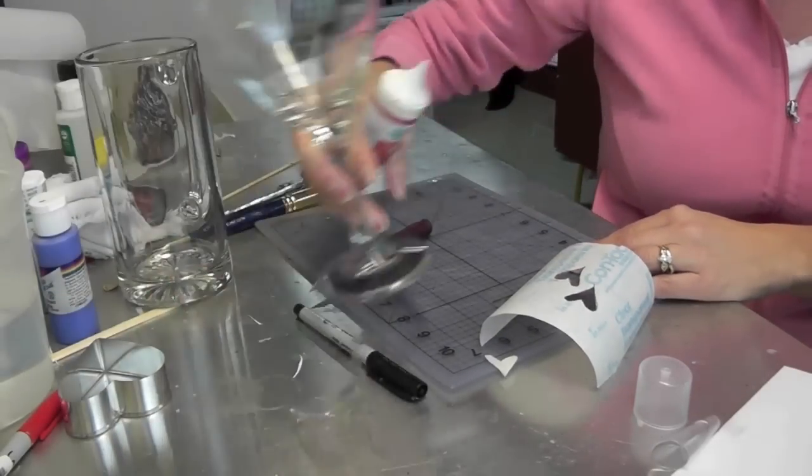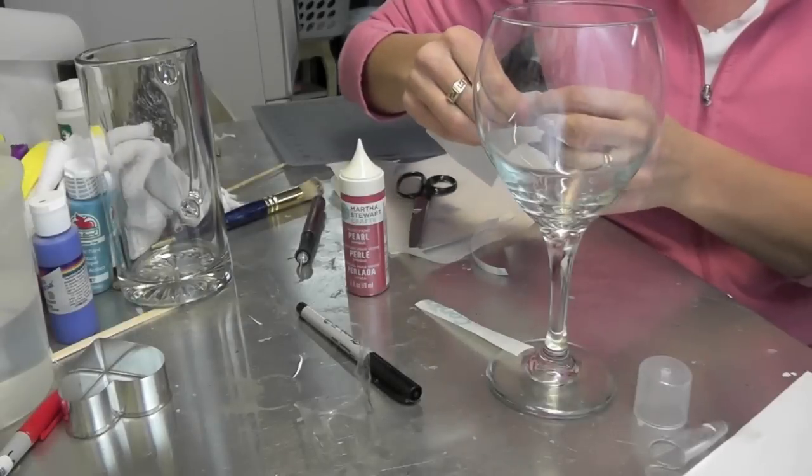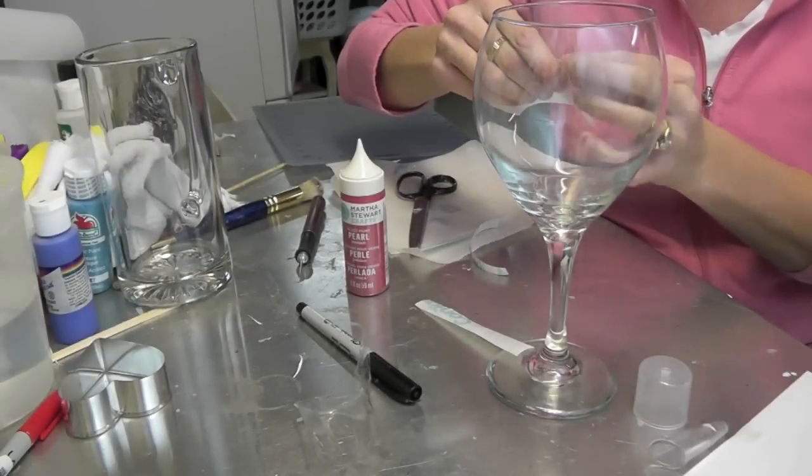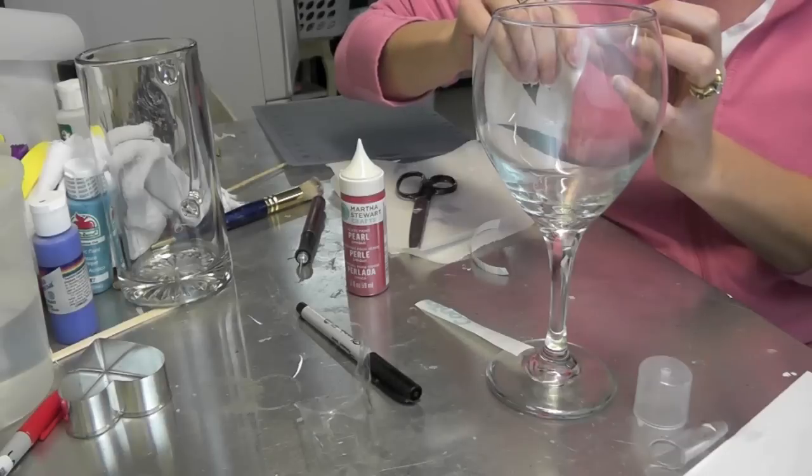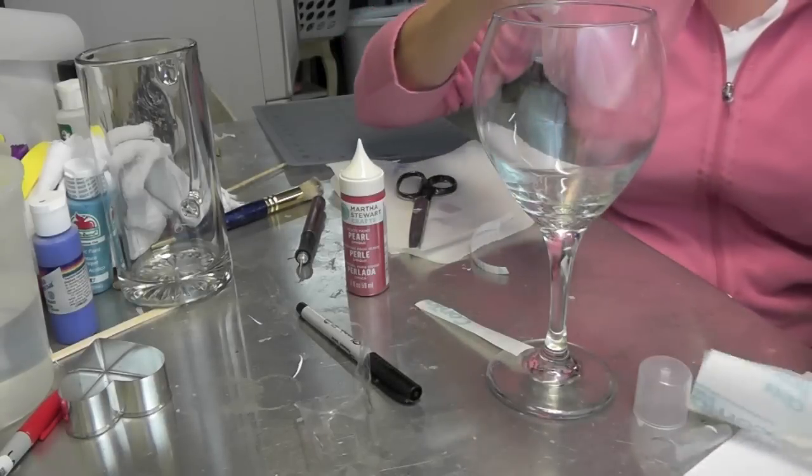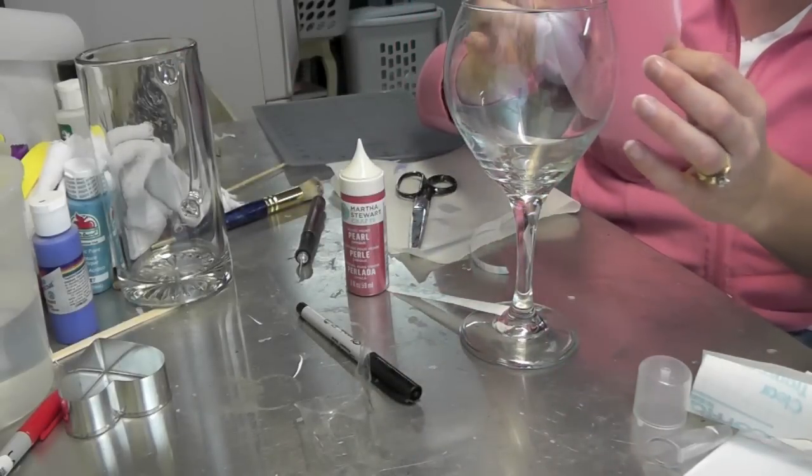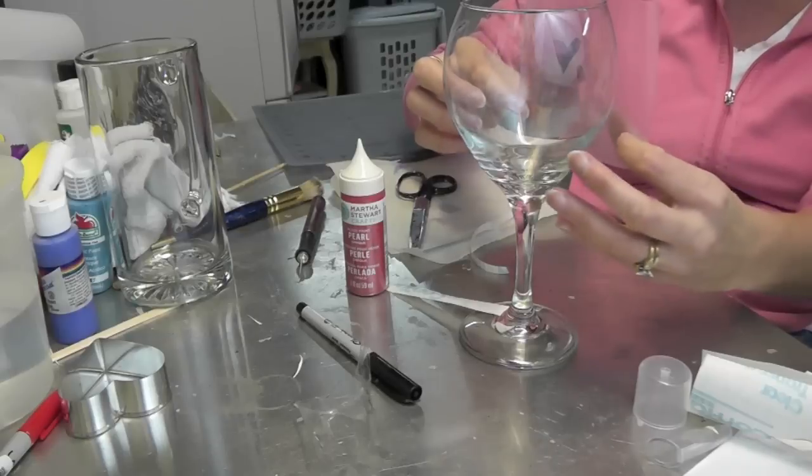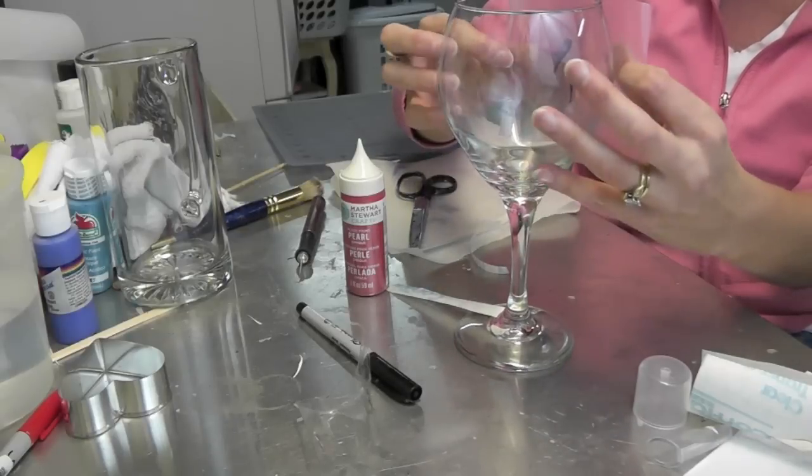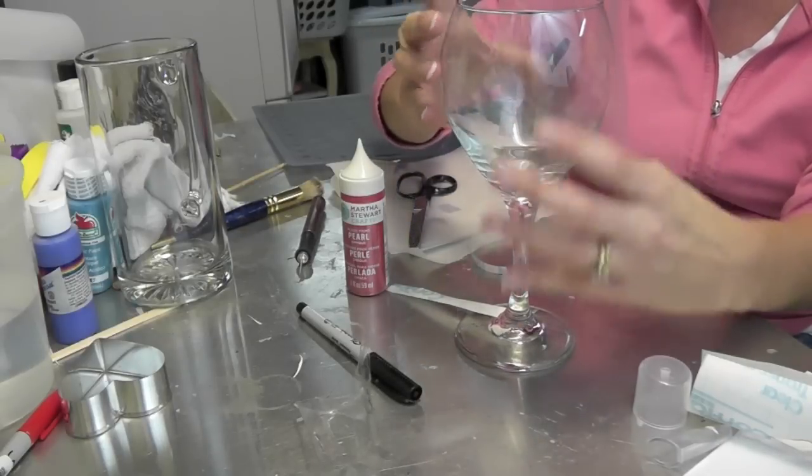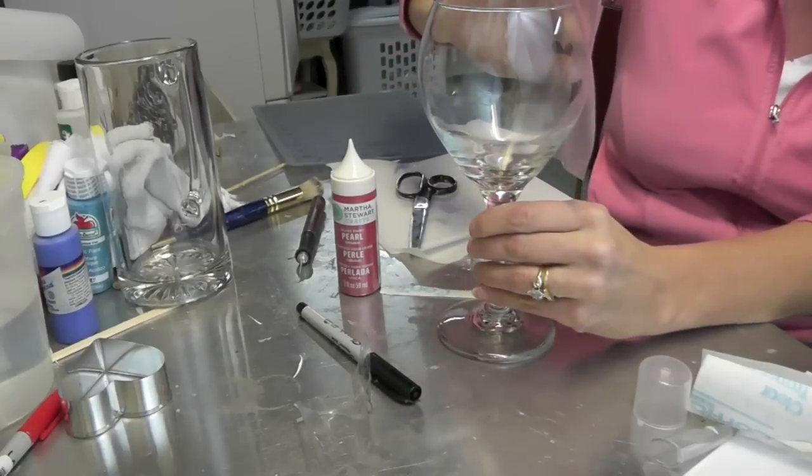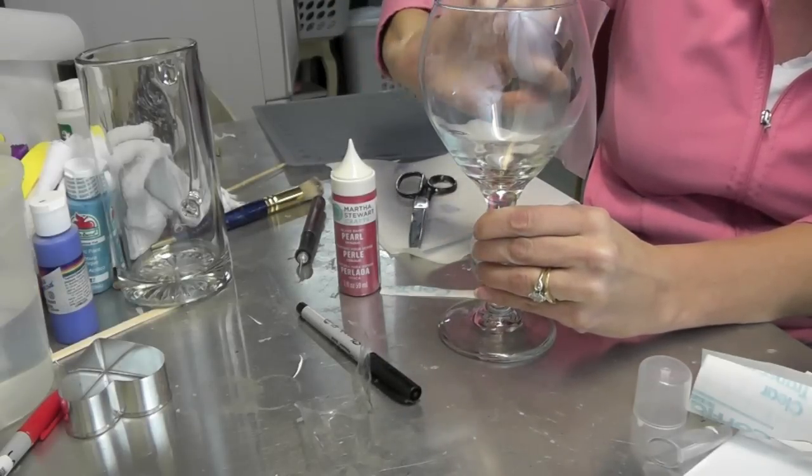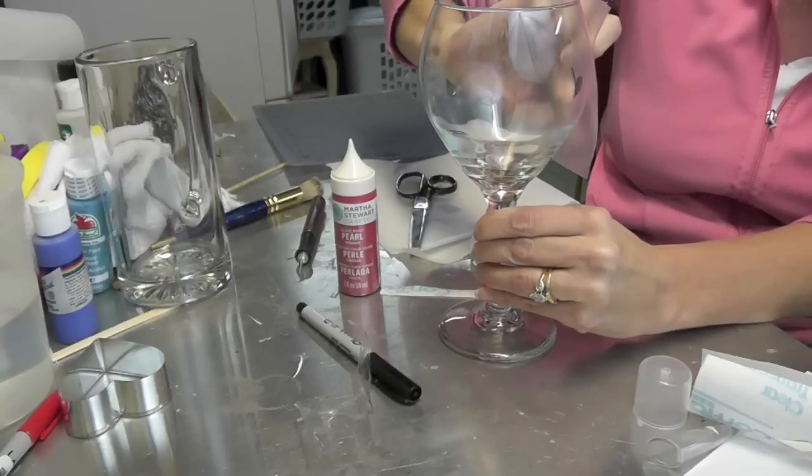So we're going to start with the wine glass. What we're going to do is peel off the backing. Once we have the backing off, we're going to place it on the glass, and I've cleaned the glass so there won't be any fingerprints on there. And if you can see it, I have it on there and I'm going to rub it down just a little bit, not too much.